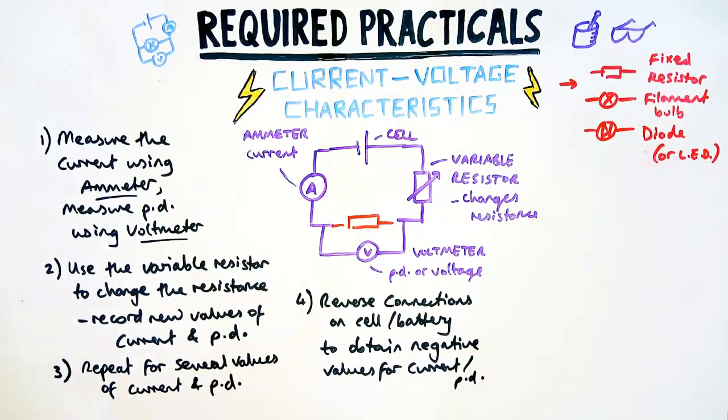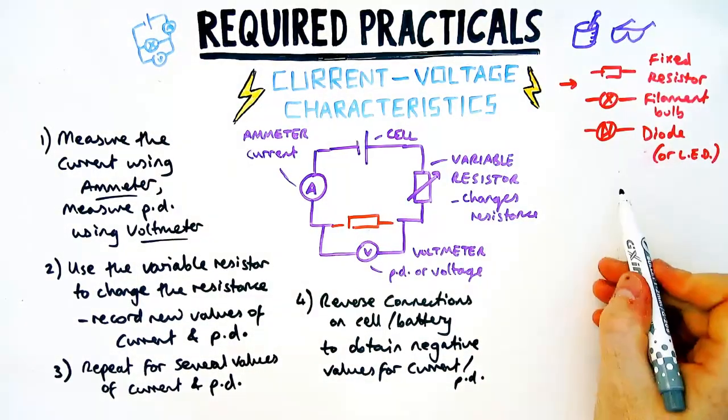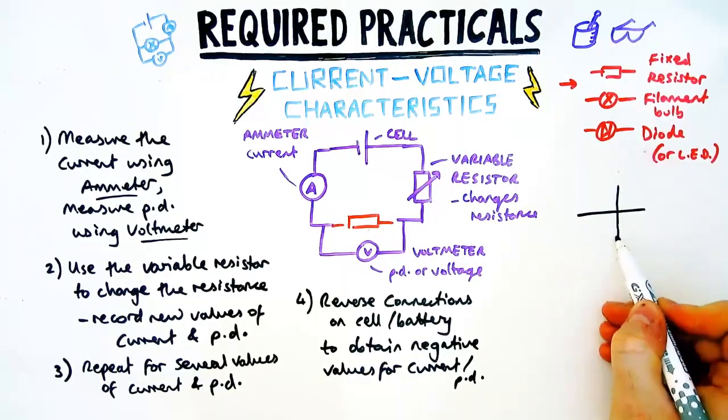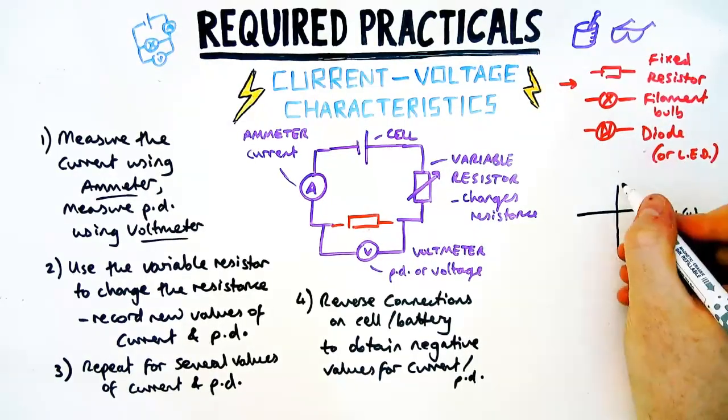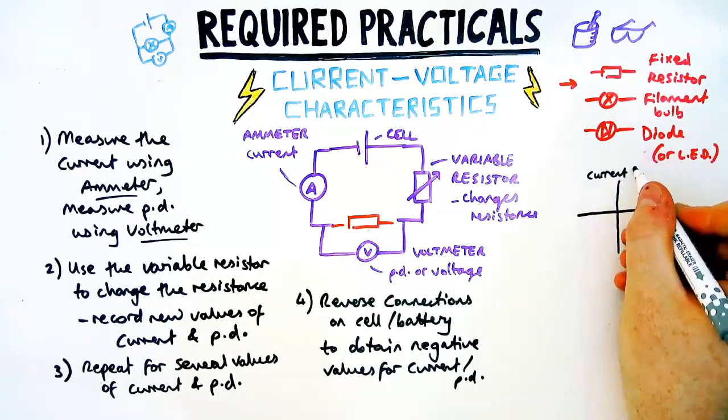The reason for that is because the graph you're going to be asked to plot for these experiments is different to a normal scientific graph. Instead of just having the x and y axis going from the origin, it has them flowing in the positive and the negative direction.